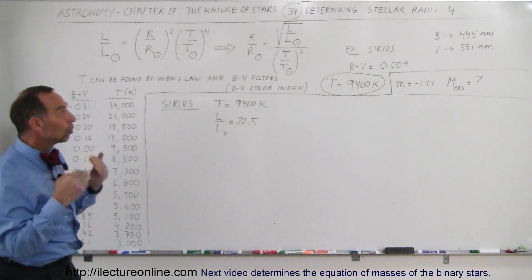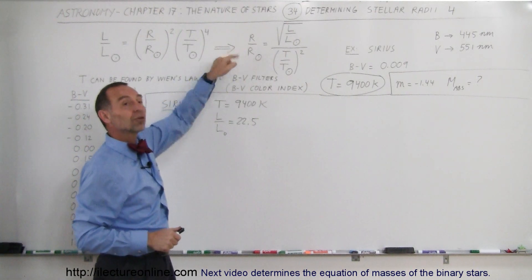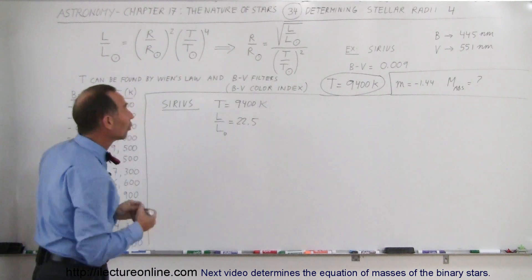And finally, we're going to use those two numbers to figure out the radius of Sirius compared to the radius of Sun using those two numbers.